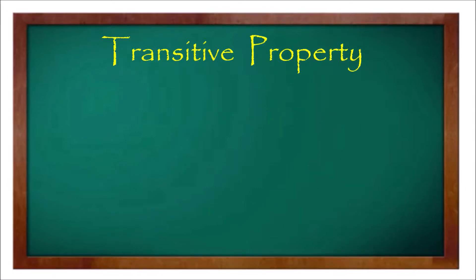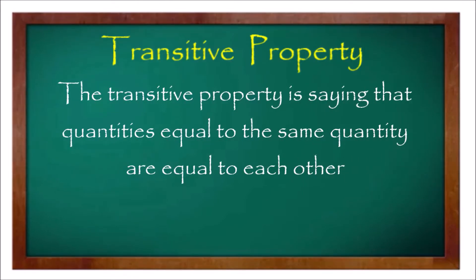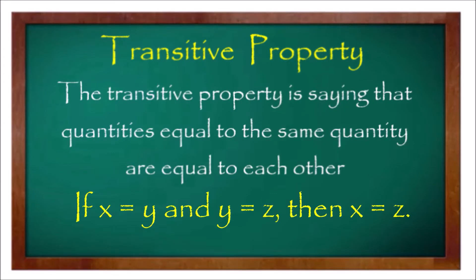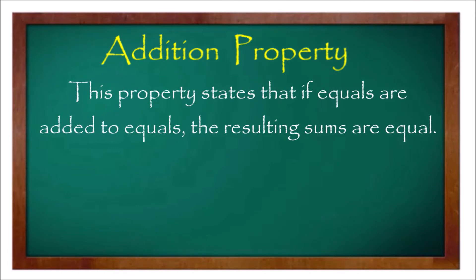Third is the transitive property. The transitive property states that quantities equal to the same quantity are equal to each other. If x is equal to y, and y is equal to z, then x is equal to z. The fourth property of equality is the addition property.